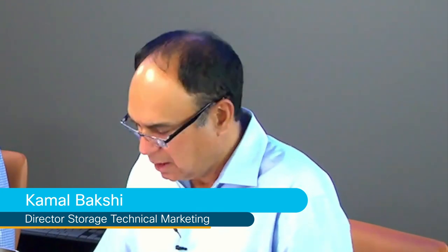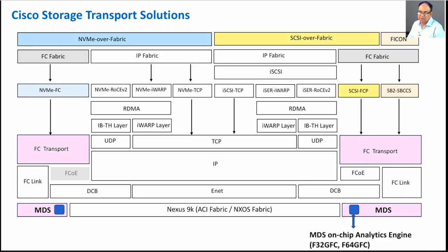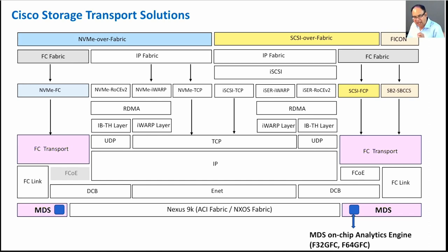There are multiple transport options for storage traffic. Fiber Channel is the most reliable, secure, and highly available transport option today. Enterprise customers put their mission-critical applications on Fiber Channel storage. Cisco, with their MDS platform, has been supporting Fiber Channel for a number of years — even IBM mainframes use Fiber Channel FICON, and SCSI FCP over Fiber Channel is also supported.